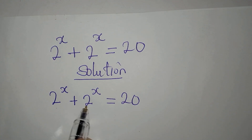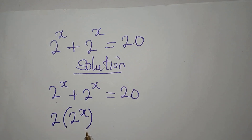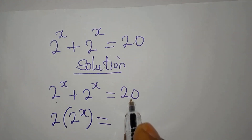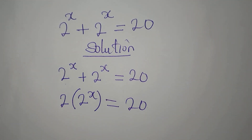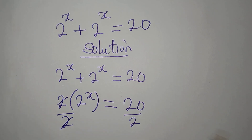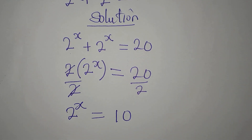What we want to do is add these two terms to get 2 times 2 to the power of x. Some persons will be tempted to say this gives 4 to the power of x, but that is not correct. This equals 2 times 2^x = 20. Now we divide both sides by 2, so 2 to the power of x equals 10, because 20 divided by 2 is 10.